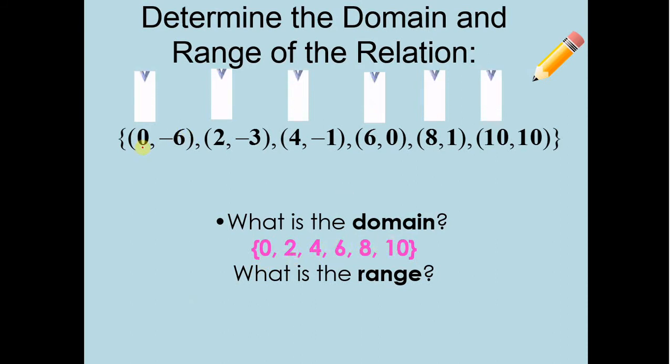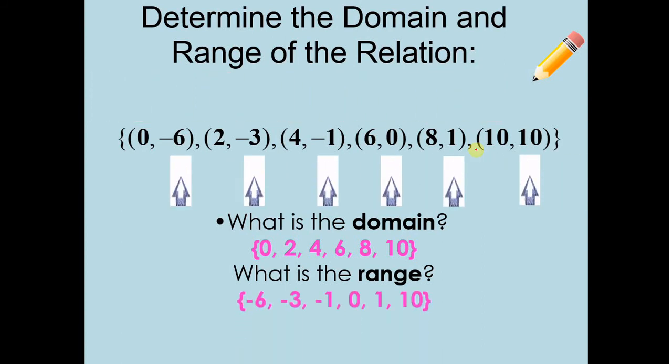8, and 10. Again, I listed my X values, the things the arrows are pointing at currently. So that's my domain. What is the range? Well, that's just the Y values right there. So the Y values are negative 6, negative 3, negative 1, 0, 1, and 10. So we put them in a list with curly braces. That's how you identify your domain and range when you're given ordered pairs like that.